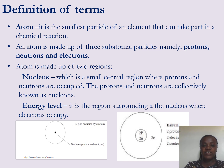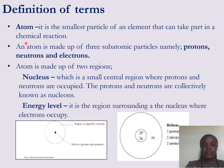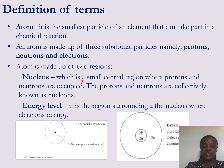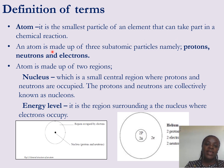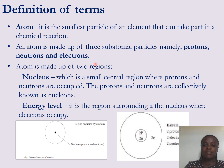The first term we are going to define is an atom. An atom is the smallest particle of an element that can take part in a chemical reaction. An atom is made up of smaller particles referred to as subatomic particles.